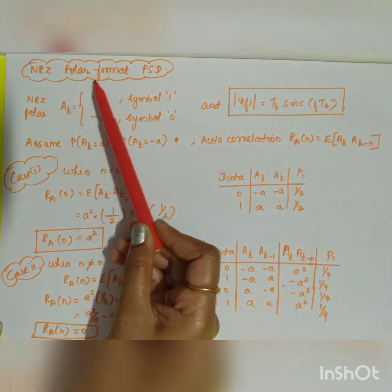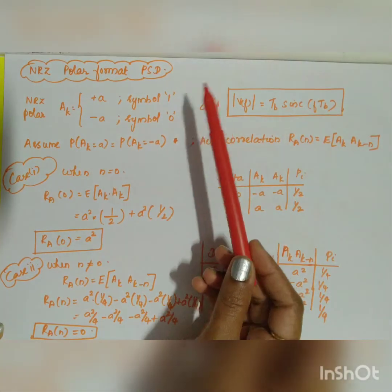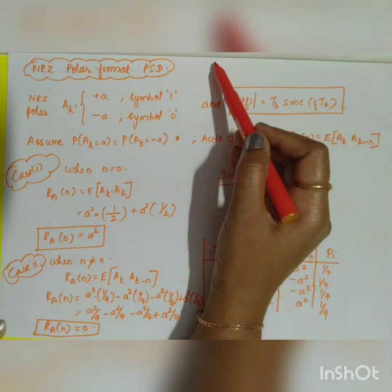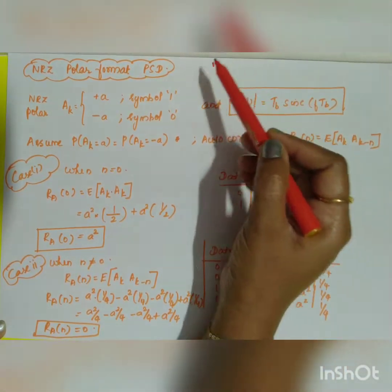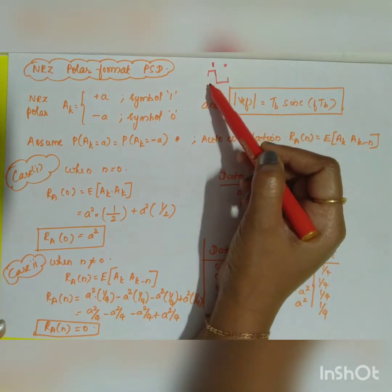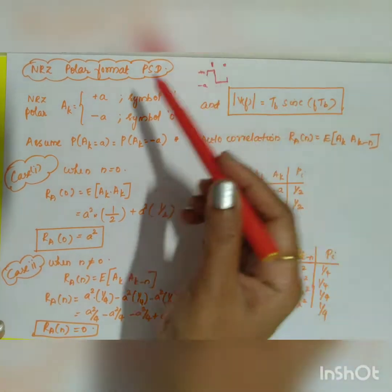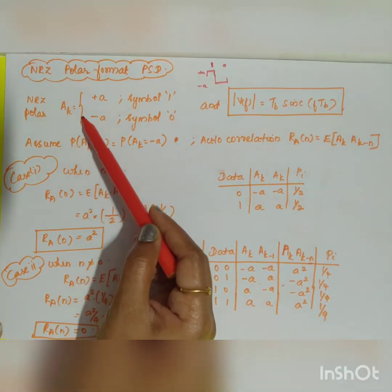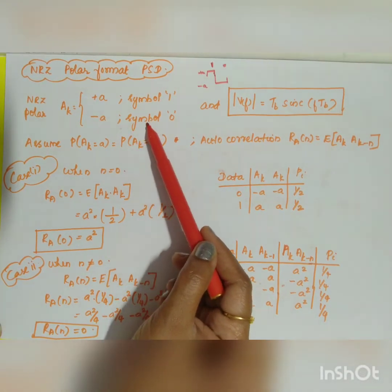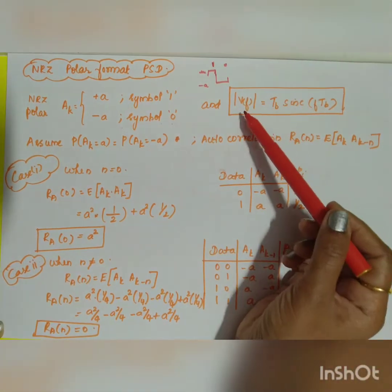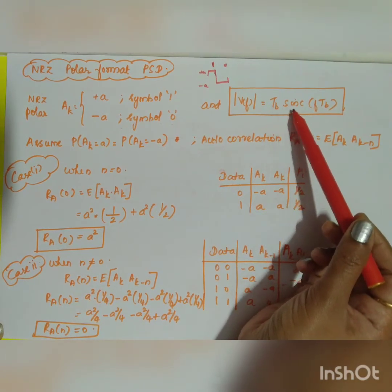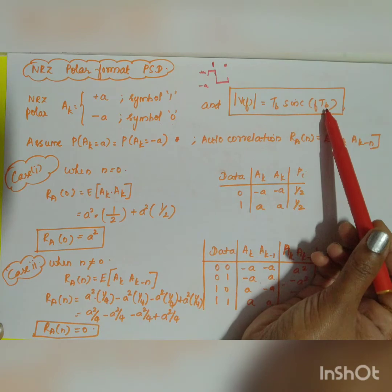The next type is the Polar Non-Return-to-Zero format and its power spectral density. In general, for the Polar format, if symbol 1 is transmitted it takes value +a, and if symbol 0 is transmitted it takes value -a. So a_k equals +a for symbol 1 and -a for symbol 0. The magnitude of V(f) is the same as that of the Unipolar format: T_b times sinc(f × T_b).